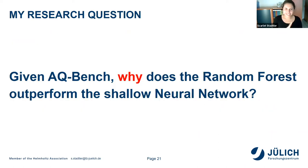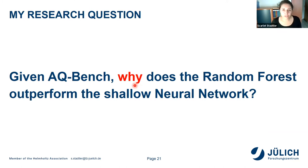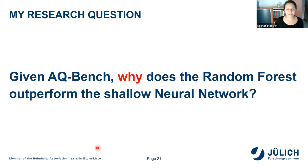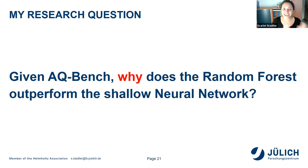Given AQBench and our atmospheric chemistry dataset, why does the random forest outperform the shallow neural network? Usually in the literature you compare models, take the best score, call it your best model, and move on. But I wanted to understand why. I hope to take you with me on this research and answer this question.